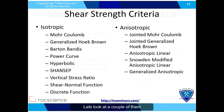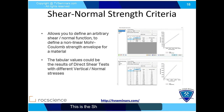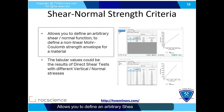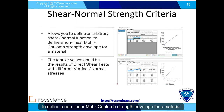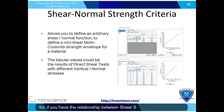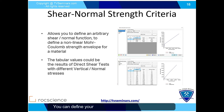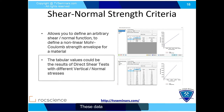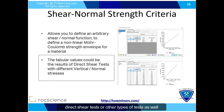Let's look at a couple of these. The shear-normal strength criteria allows you to define an arbitrary shear-normal function to define a nonlinear Mohr-Coulomb strength envelope for a material. If you have the relationship between shear stress and normal stress, you can define your own nonlinear Mohr-Coulomb criteria. These values can come from direct shear tests or other types of tests.